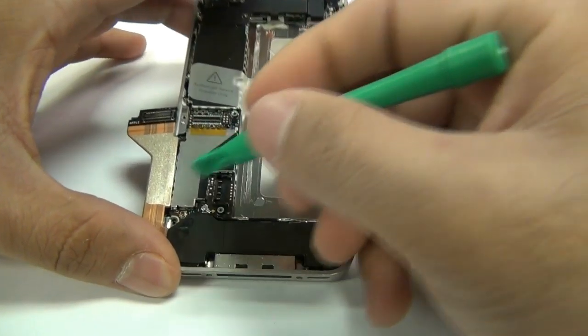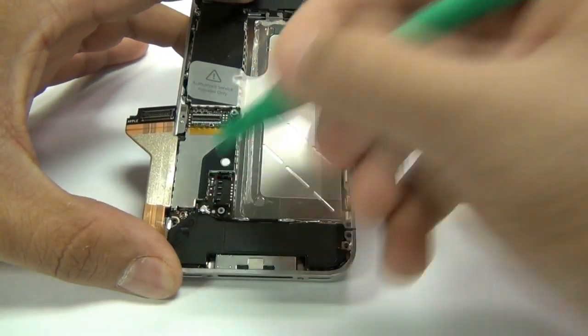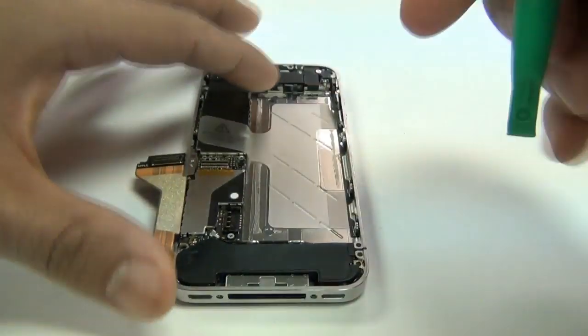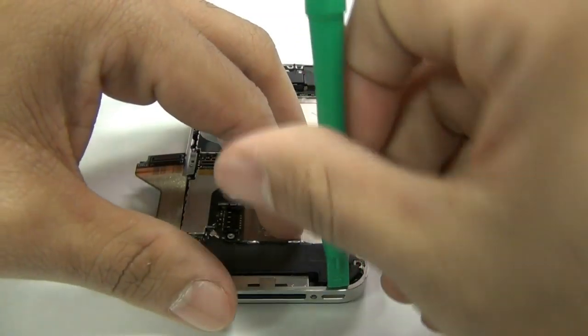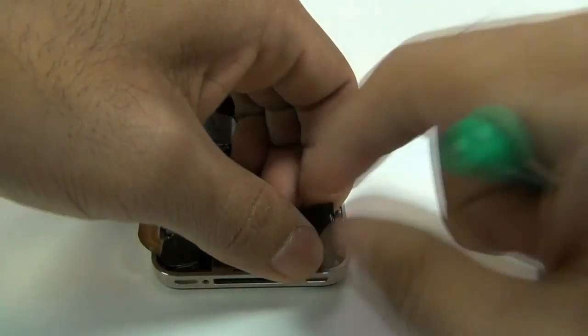Next, you can disconnect the Wi-Fi antenna flex ribbon. After that is removed, you can go ahead and remove your loudspeaker dock assembly.